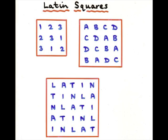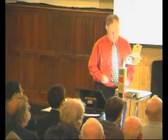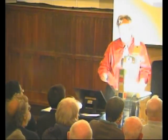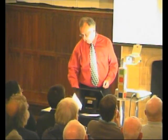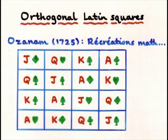So it's a 5x5 Latin square with the letters L-A-T-I-N. These arose in various situations, and one of them is in a recreational book — a book by Ozenarm. In the 1725 edition, you've got the puzzle of taking the 16 court cards and arranging them in a square array such that the values — Jack, Queen, King, Ace — if you look at those red symbols, they form a Latin square.